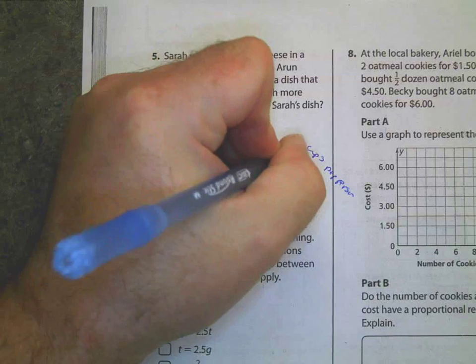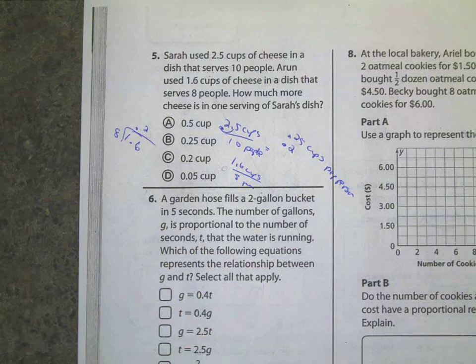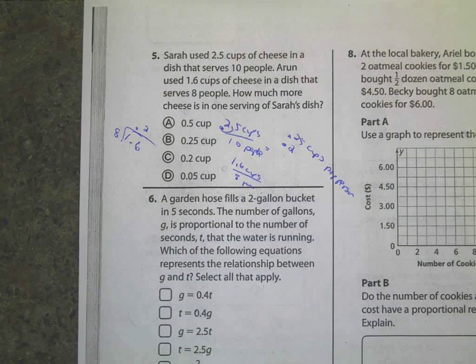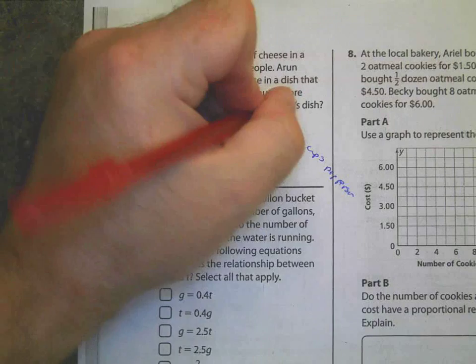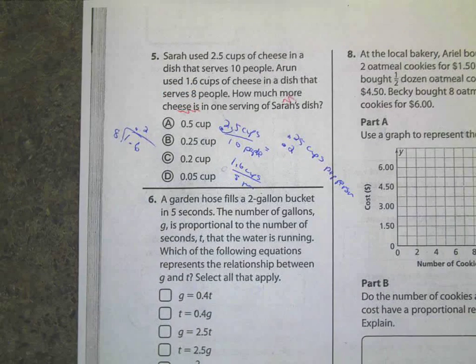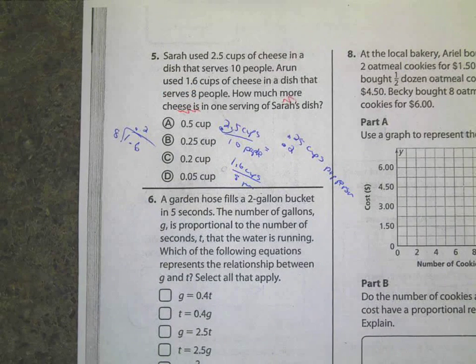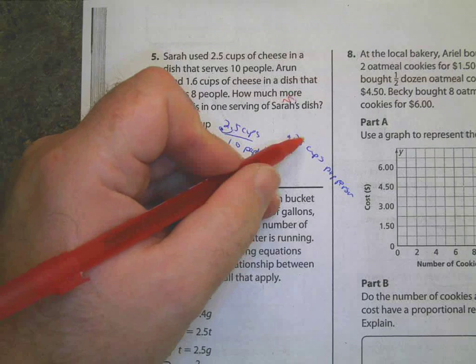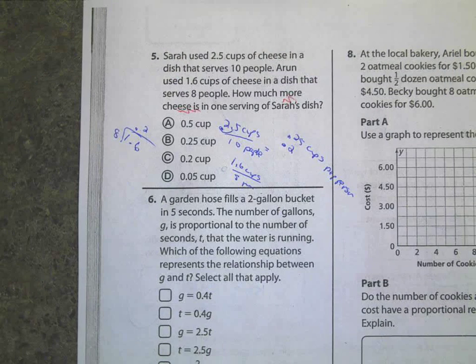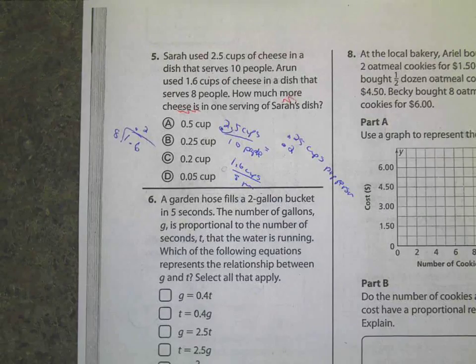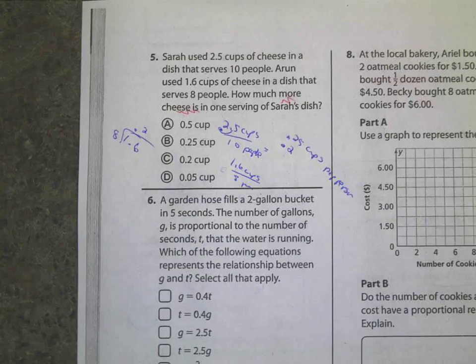Now, here's the part that's going to mess a couple people up. If it says, how much more cheese? What kind of math do I have to do to calculate the difference between 0.25 and 0.2? Subtraction. And notice what I said. To calculate the difference. Difference means subtract. Now, I can't subtract these though.